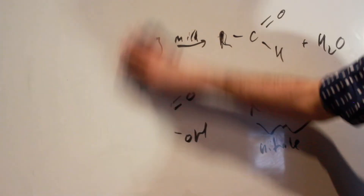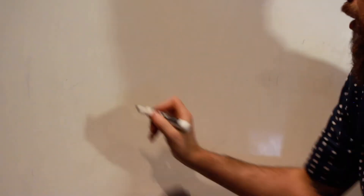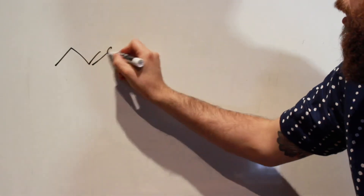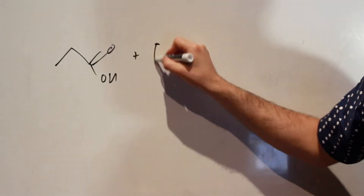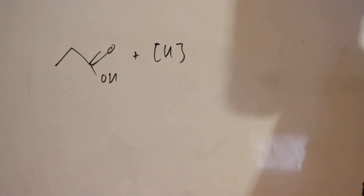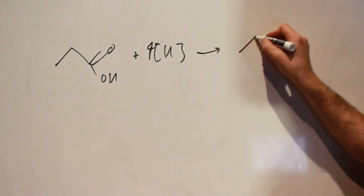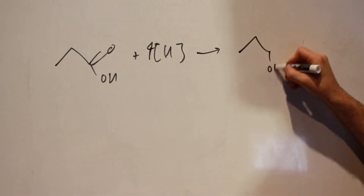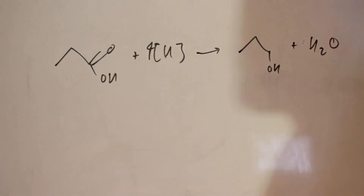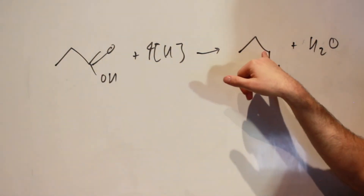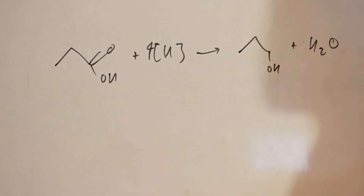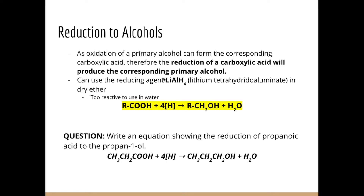Propanoic acid — one, two, three carbons. We add the reducing agent, lithium tetrahydridoaluminate, four molar equivalents, and we convert it back to the corresponding alcohol, and then water as the byproduct. We're adding two hydrogens onto the carbon and two hydrogens on the water, so we are reducing it. The answer is propanoic acid back to propan-1-ol. We don't have to specify the carbon of propanoic acid, but we do have to specify the carbon of the alcohol if there are potential isomers that can form.